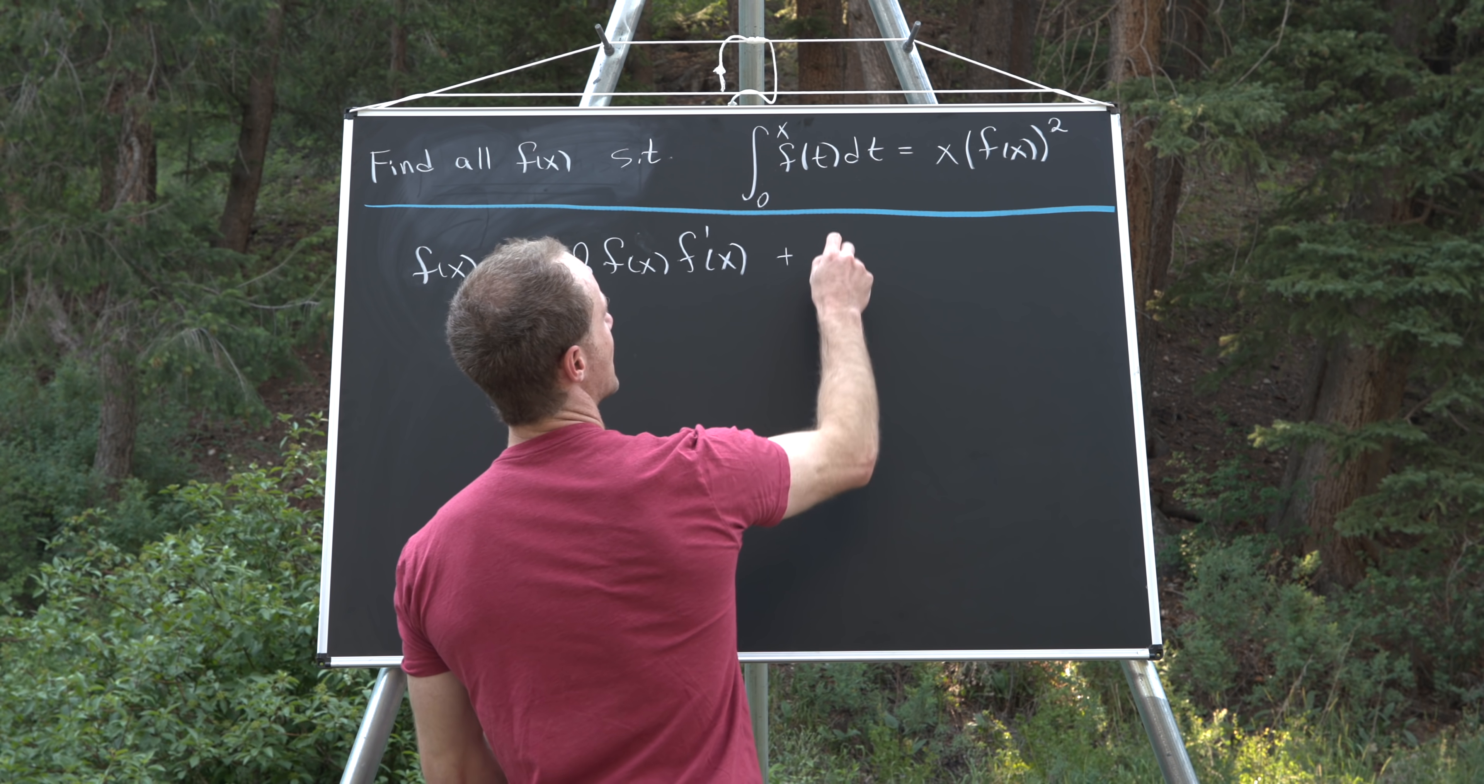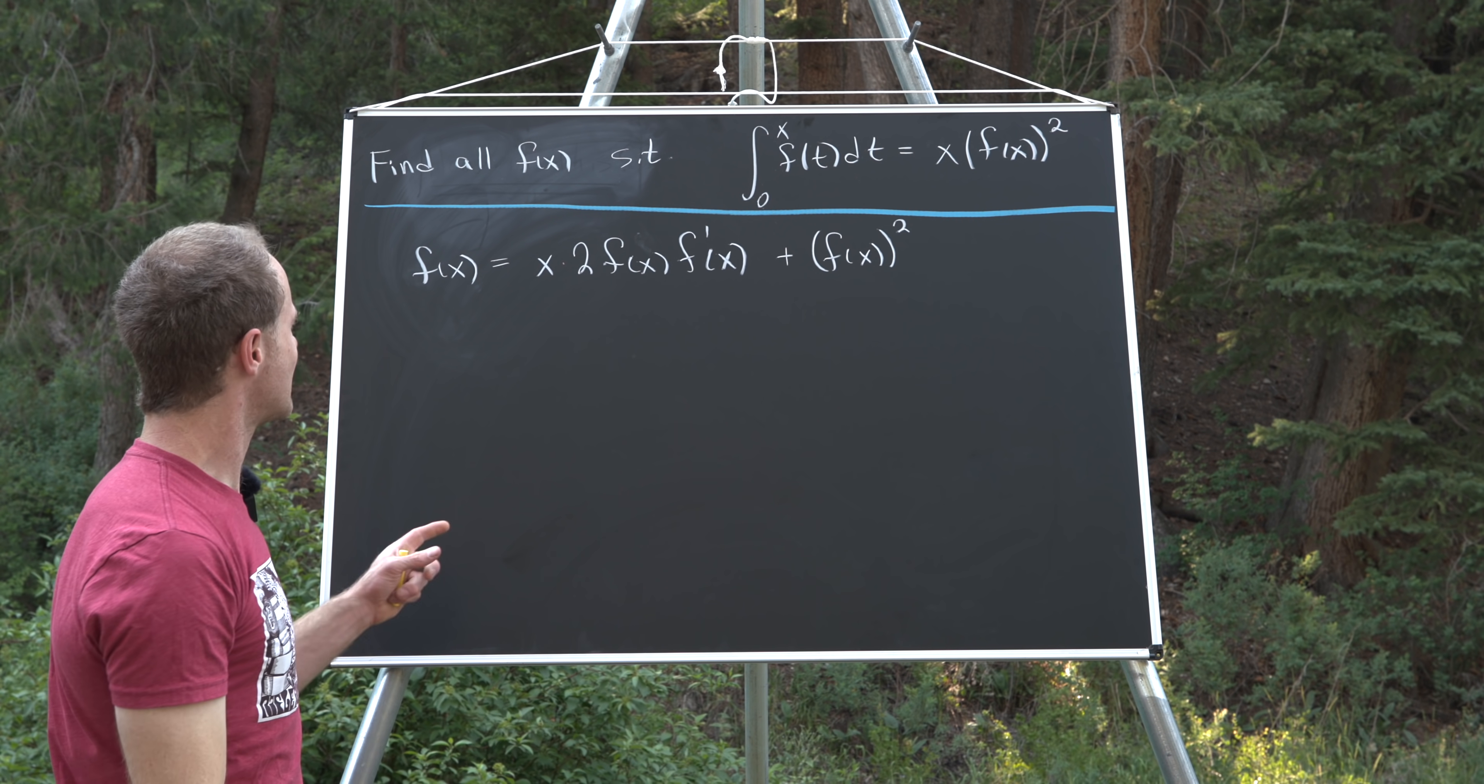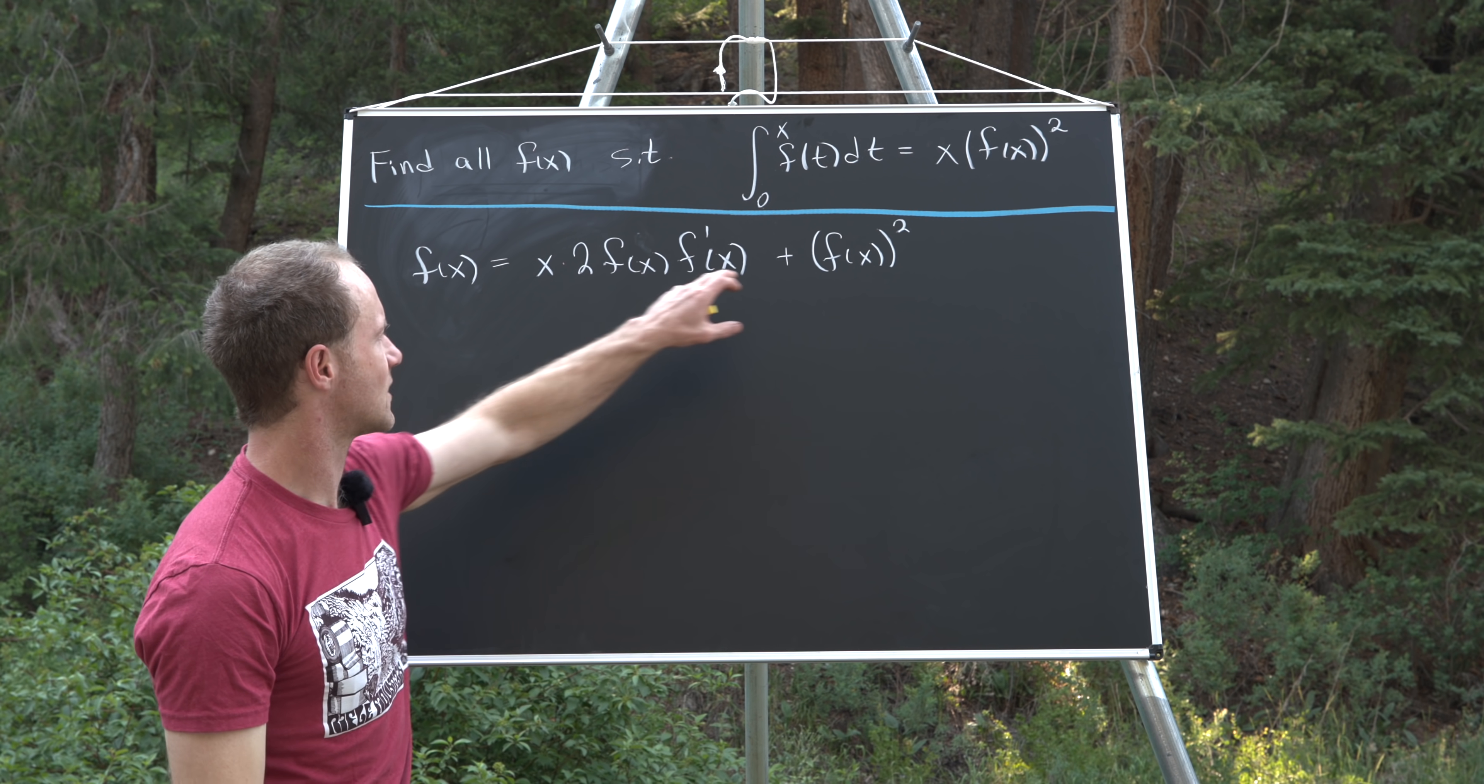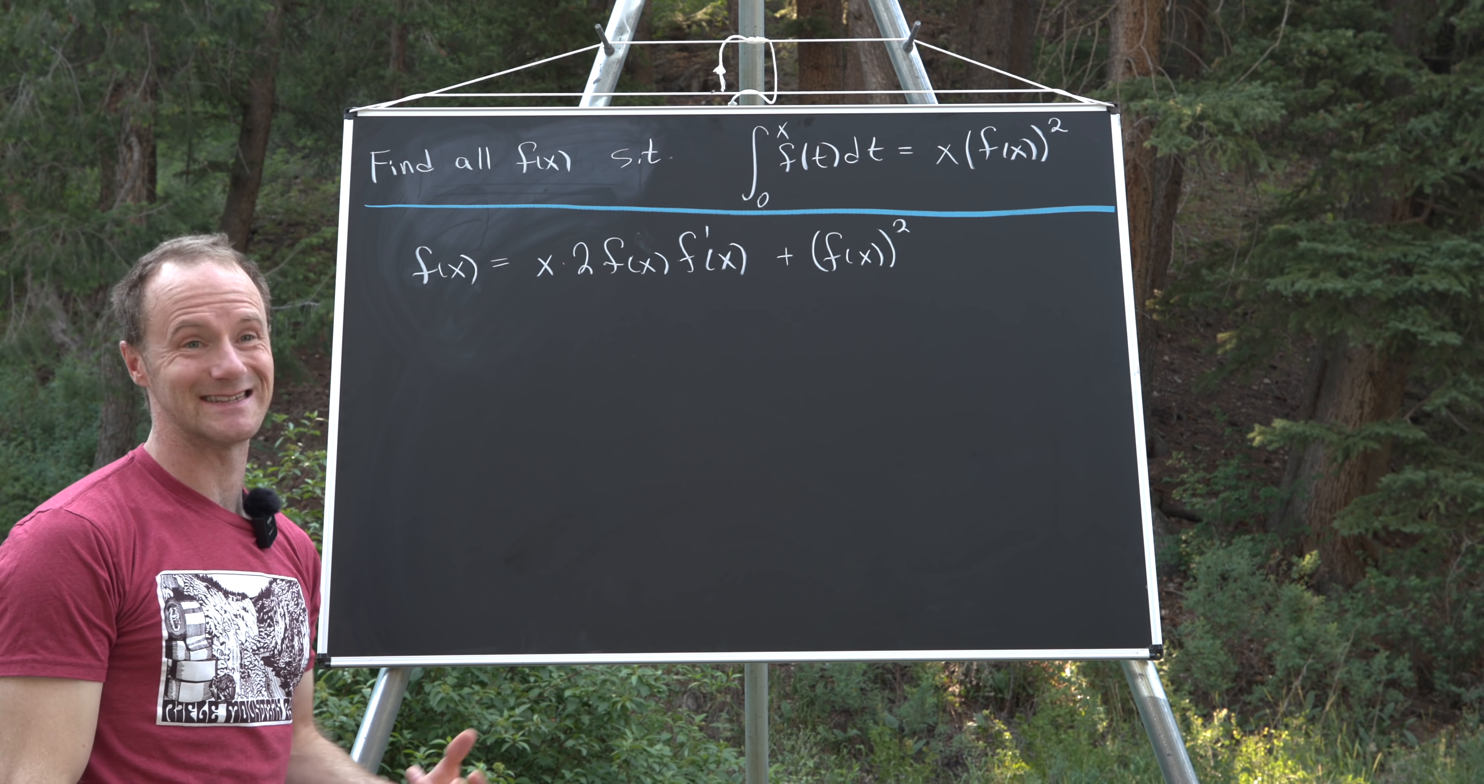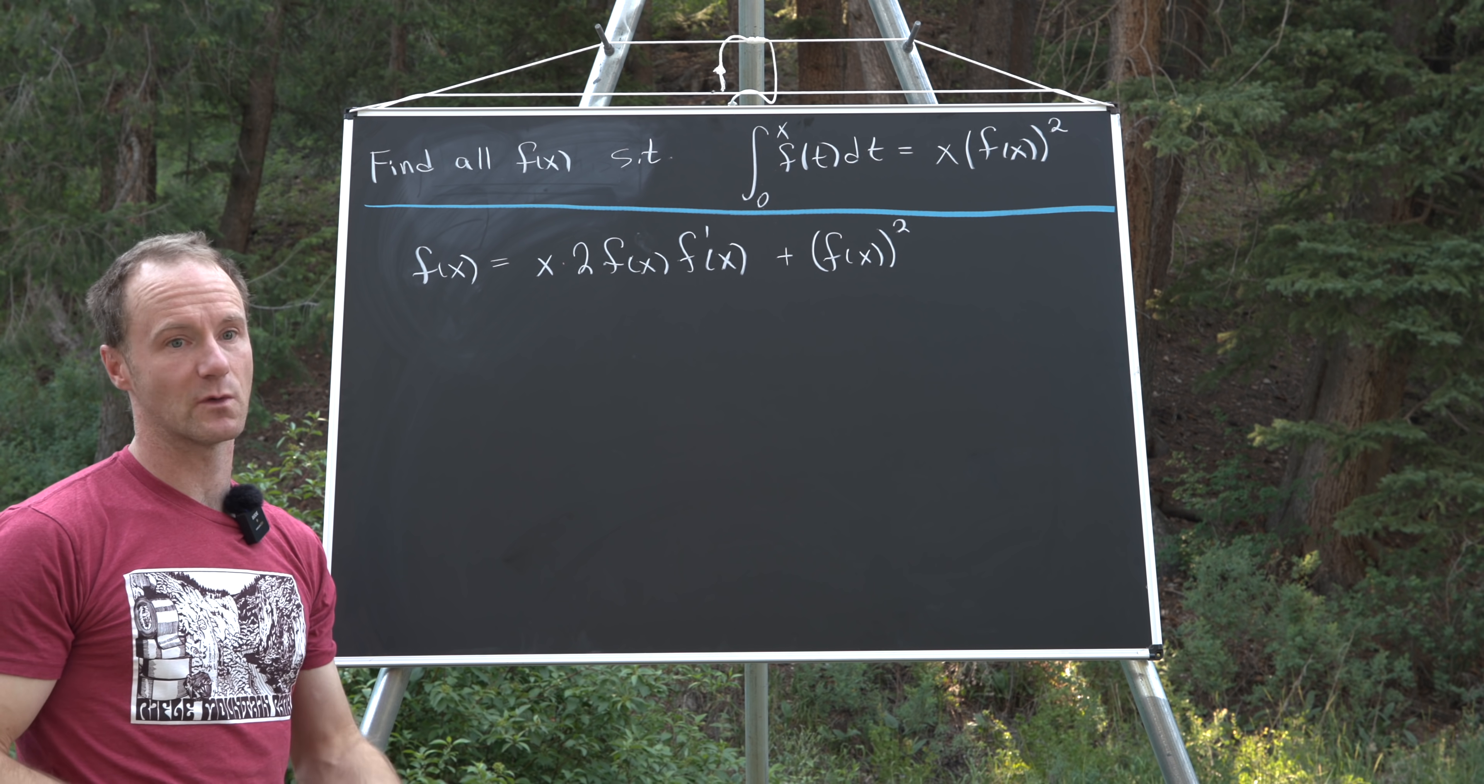And then after that, we just have f of x quantity squared. Now let's see what we've got. We've got a factor of x on the left-hand side and on the right-hand side that we could maybe cancel. But we can only do that if f is not identically zero or in some sort of interval where f is not equal to zero.